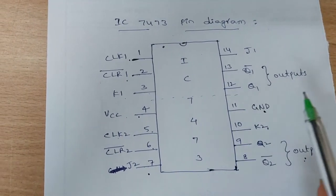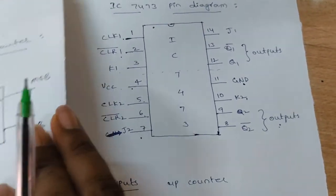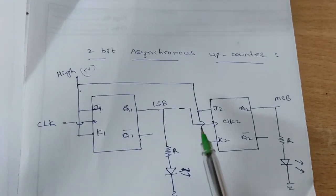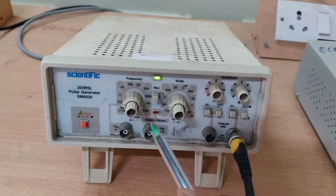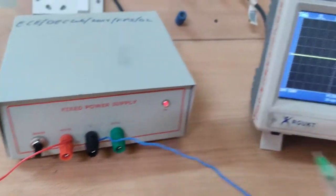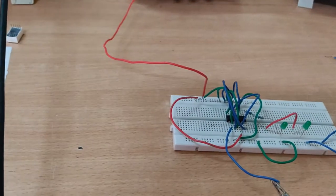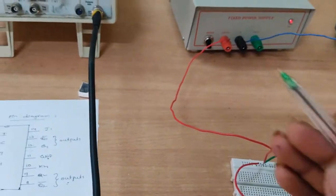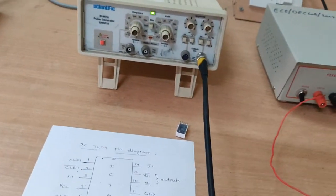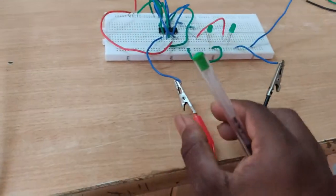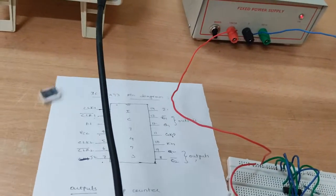This is the pin diagram of IC7473, the JK flip-flop. The circuit diagram is connected on the breadboard. This is the pulse generator, this is the fixed power supply, and this is the digital CRO. In our experiment, we have to give the clock input — that clock signal comes from the pulse generator. This is the CRO probe; it has a positive and a negative terminal. The positive pin is connected to the clock input of the IC.